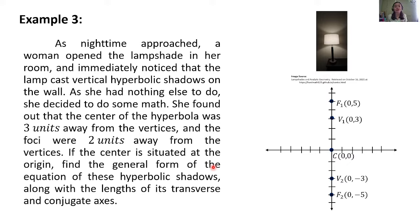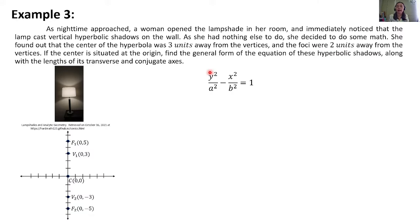What is being asked is the general form of the equation of the hyperbolic shadows and the lengths of the transverse and conjugate axis. The standard form for a vertical hyperbola with center at the origin is: y²/a² − x²/b² = 1. Since the transverse axis orientation is vertical and the center is at the origin, this is the standard form we will use.